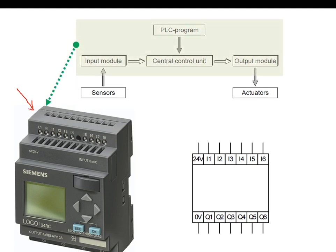Every PLC must have the following components: an input module, an output module, a central control unit, and also software to run the PLC unit. The PLC is going to be interfaced with sensors as inputs on the input module, and also interfaced with actuators as outputs on the output module.